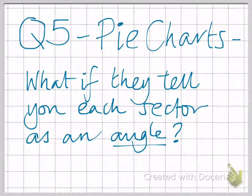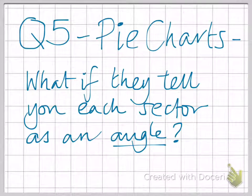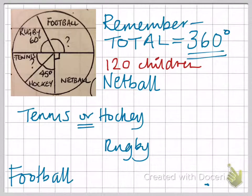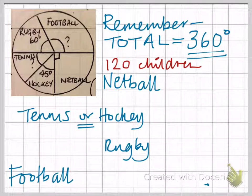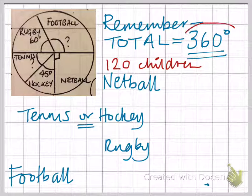Q5 helps you out with pie charts where each sector has been given as an angle rather than a percentage or a fraction. In this one, 120 children have been asked about their favourite sport. Some of the angles have been marked on, others you have to work out yourself. The thing to remember is all of the angles in the circle add up to 360.